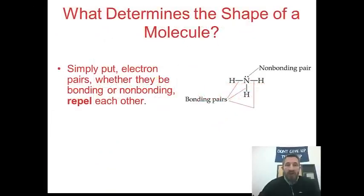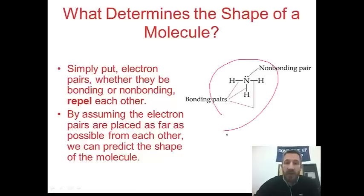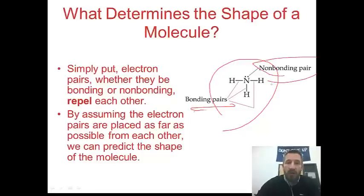So what determines the shape of a molecule? Simply put, the electron pairs — whether they be bonding pairs or non-bonding lone pairs — are going to repel each other. All electrons are negative and they repel. By assuming the electron pairs are placed as far from each other as possible, we can predict molecular shape. For example, in the molecule drawn here, we have three bonding pairs and one lone pair, or non-bonding pair, and that's what we look at to determine shape.